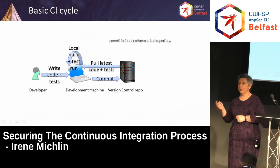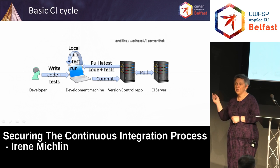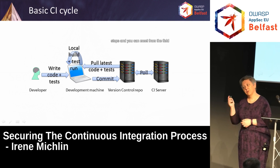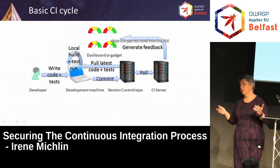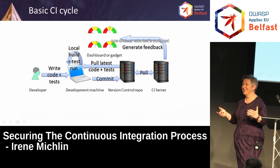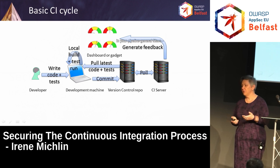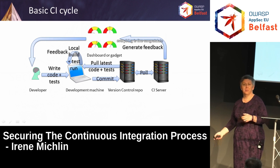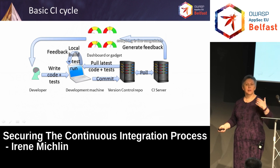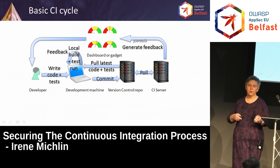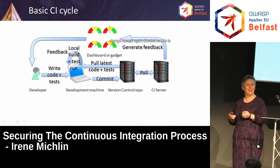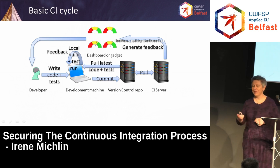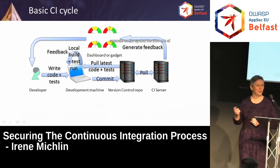Then commit to the version control repository. We have CI servers that continuously poll the repo for commits, test the new commits, run the build, run whatever extra tests you've configured in your pipeline, and generate feedback to some kind of dashboard or gadget. The developer observes the feedback — if everything is fine, congratulate yourself on the next feature; if not, rework, change, commit again, repeat. So this is the basic cycle.